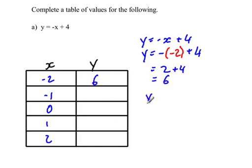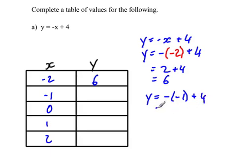For the next one, y equals negative, and we're going to sub in negative 1 this time, plus 4. And this is negative 1 times negative 1, which is positive 1. Plus 4 is 5.